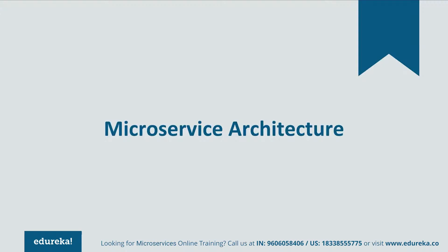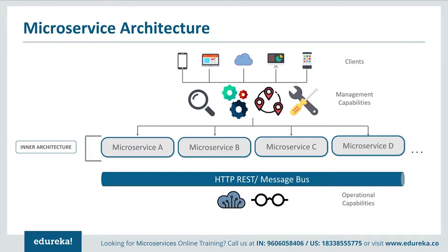Let's look at different components of the microservice architecture. The architecture starts with different clients from different devices trying to perform different management capabilities such as build, search, and notification. Each functionality is segregated into separate microservices handling their own data — for example, microservice A handles search, microservice B handles build, microservice C handles notifications, and so on. All these individual microservices have their own load balancing and execution environments. They communicate with each other through REST or a message bus to perform operational capabilities such as automation and monitoring. Client requests are passed to the internal architecture through an API gateway.